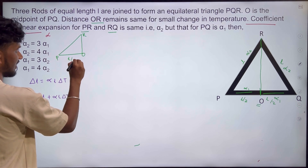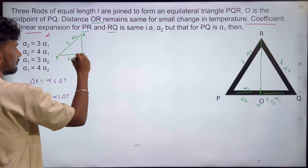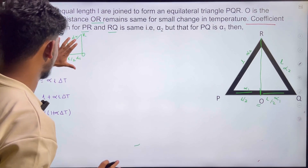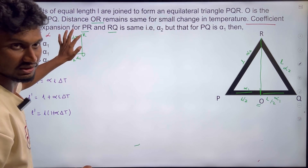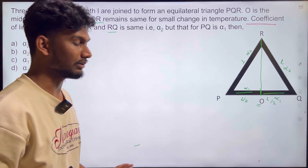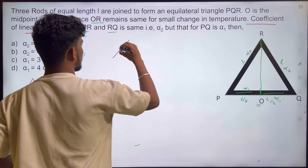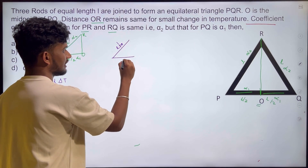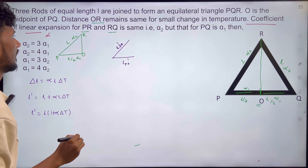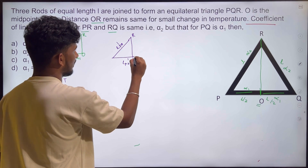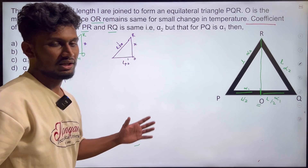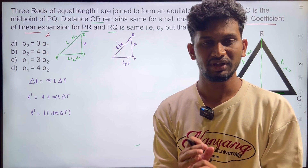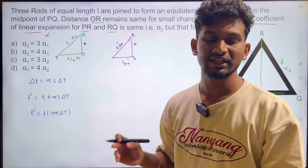From the right-angle triangle formed at O, the length PR is L with coefficient alpha2, and PO is L/2 with coefficient alpha1. We have PQ, PR, RQ, and RO. The distance RO is x. We have the equations and conditions relating alpha1 and alpha2, and we have two solutions that are very simple.